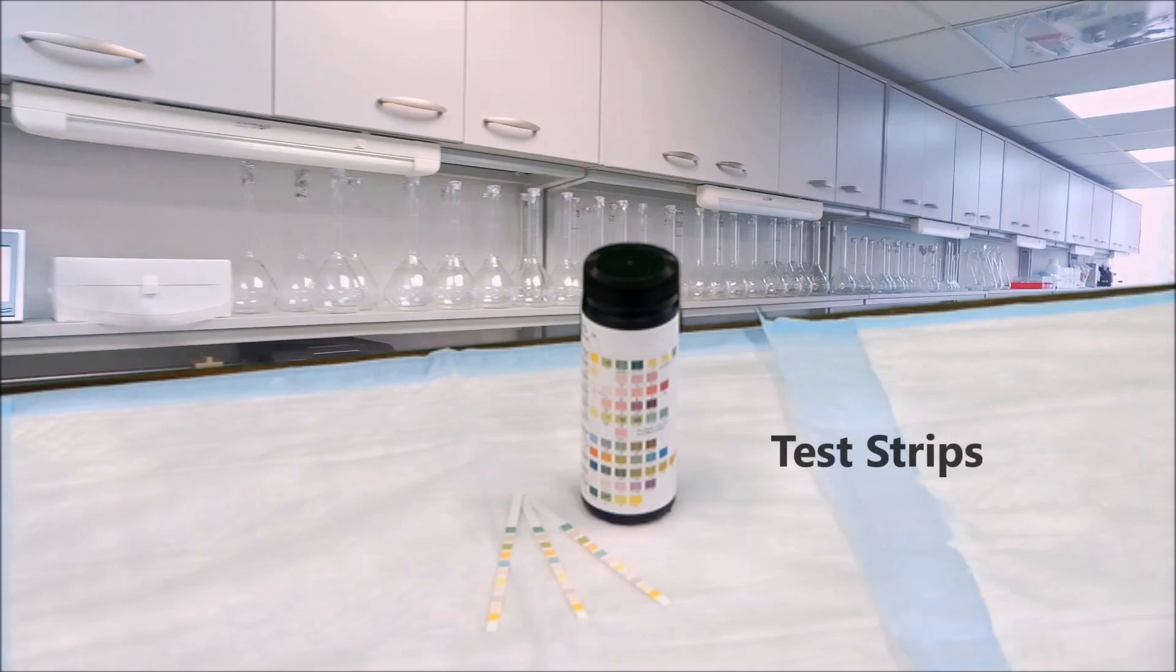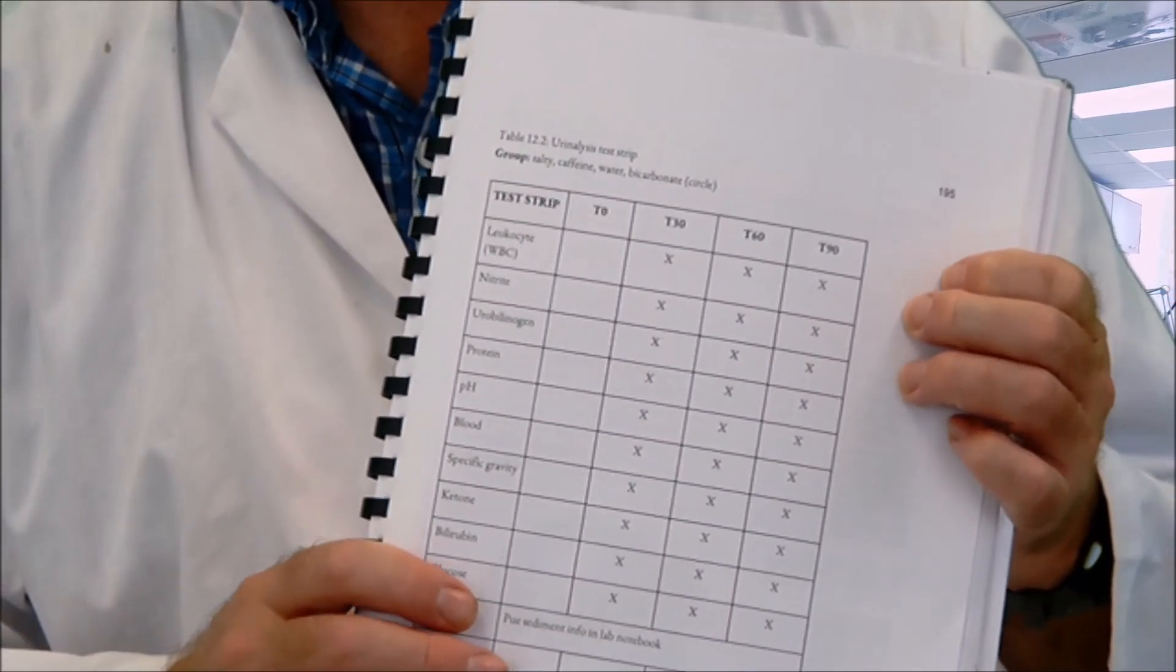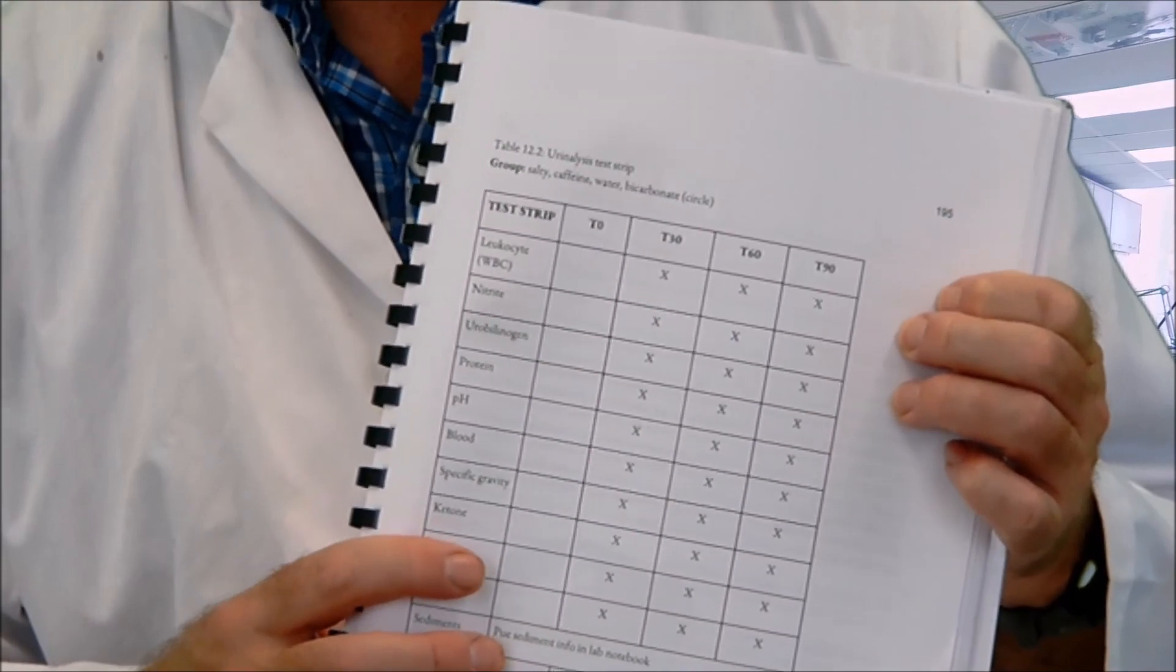Next, you will need three urinalysis test strips and accompanying color chart. You will also need the data entry table from page 195 of your lab manual.